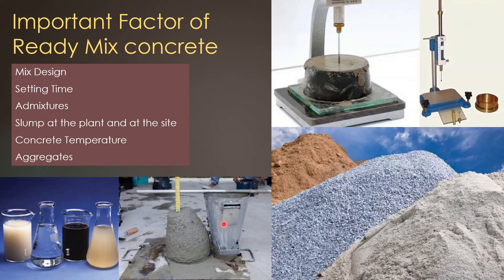Regarding slump: during mix design, you specify the slump at the site, because when the concrete arrives at site there should be adequate workability, and slump is the workability indicator. If the batching plant is not nearby, you measure the slump at the plant and then estimate the slump drop over time so you know the expected slump at site. You check slump at the batching plant and can also check it at site. The actual required slump must be as specified in the mix design at the site — if that requirement is not met, the concrete will be rejected.